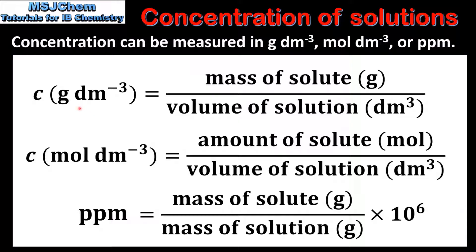The first equation shows how to calculate concentration in grams per cubic decimeter, which is the mass of the solute in grams divided by the volume of the solution in cubic decimeters. To calculate the concentration in moles per cubic decimeter, divide the amount of solute in moles by the volume of the solution in cubic decimeters.